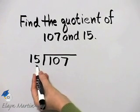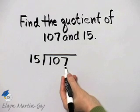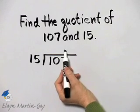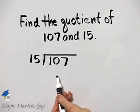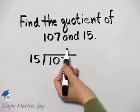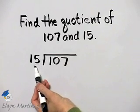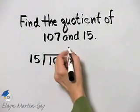How many times does 15 divide into 107? Well, let's make a guess. 4 times 15 I know is 60. 6 times 15 is 90. Let's try 7.